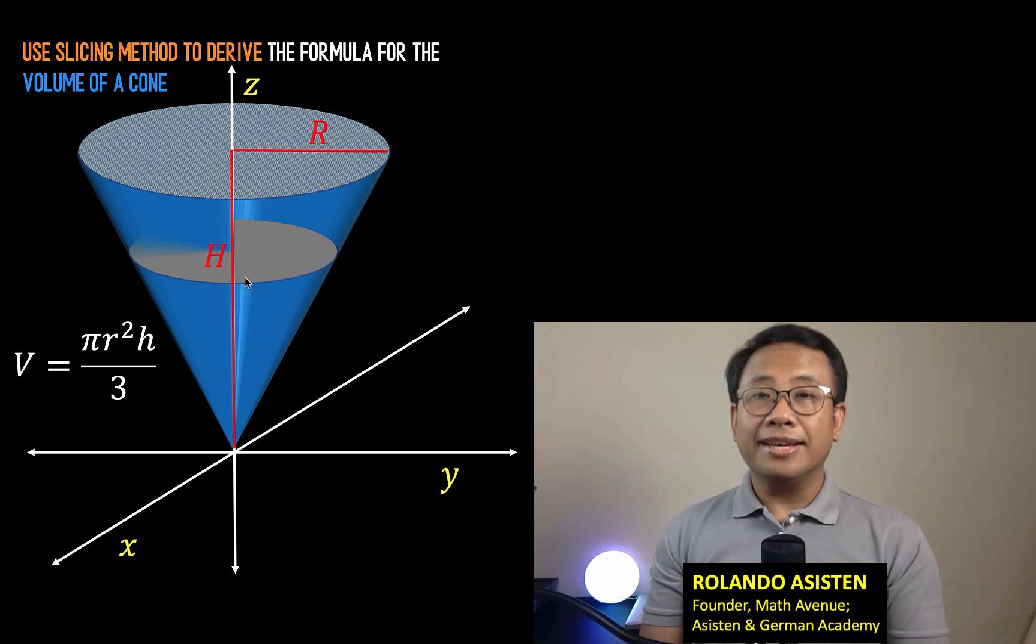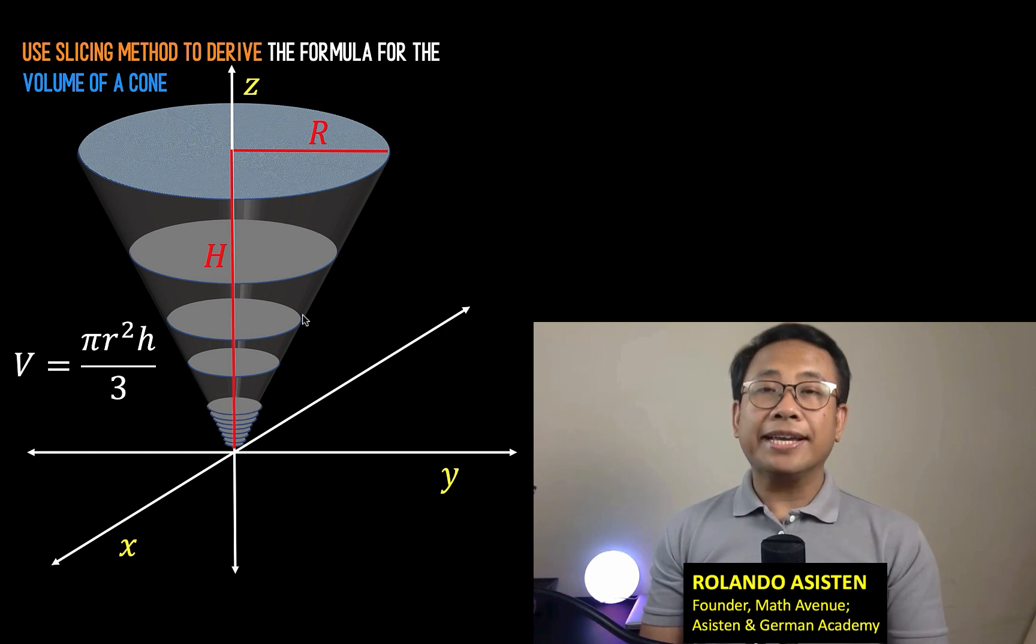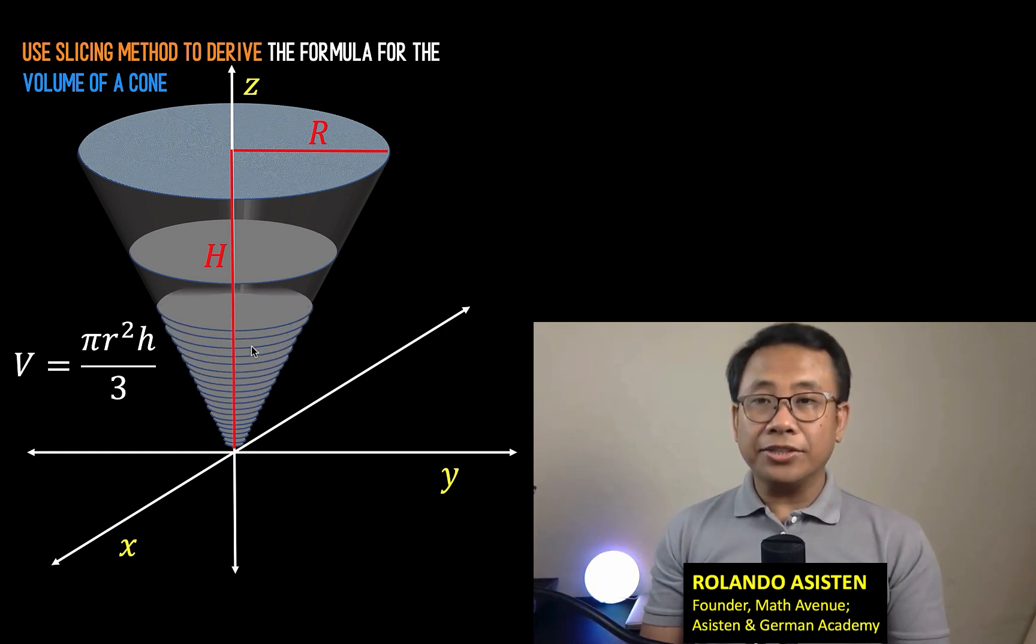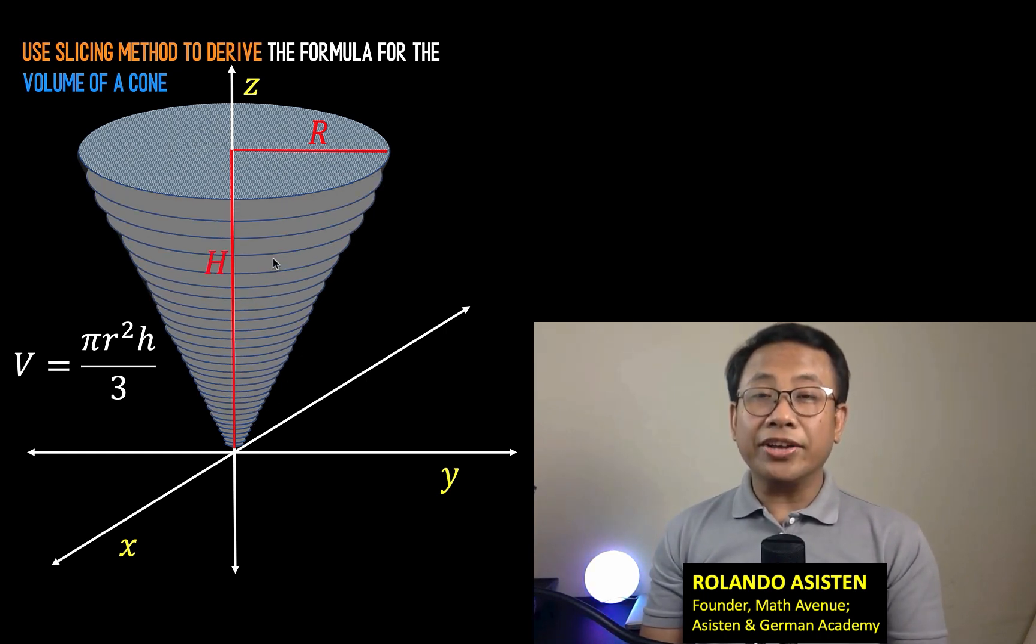Now, let's cut this cross-section, a circular disk that is perpendicular to the vertical axis z. And let's continue cutting this cone into circular disks. In fact, this cone can be looked at as the summation of all these circular disks that we can cut from the cone.